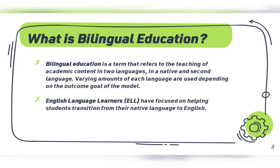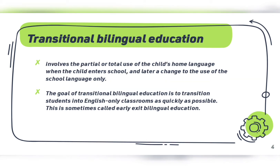Historically, program models used for English language learners, or ELL, have focused on helping students transition from their native language to English. Transitional bilingual education involves the partial or total use of the child's home language when the child enters school, and later a change to the use of the school language only. The goal of transitional bilingual education is to transition students into English-only classrooms as quickly as possible. This is sometimes called early-exit bilingual education.